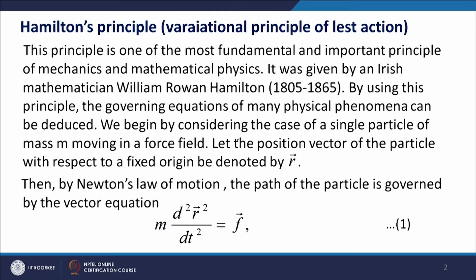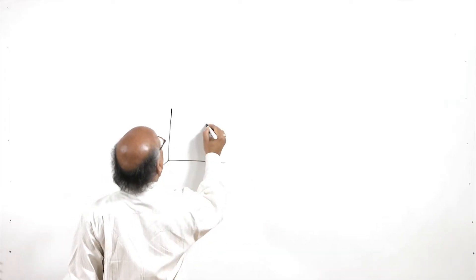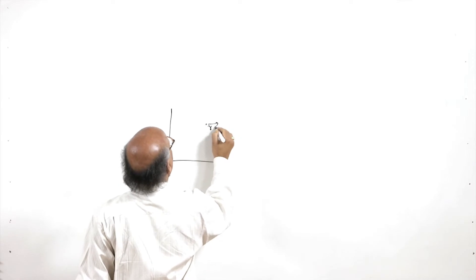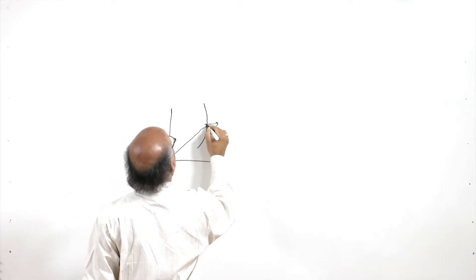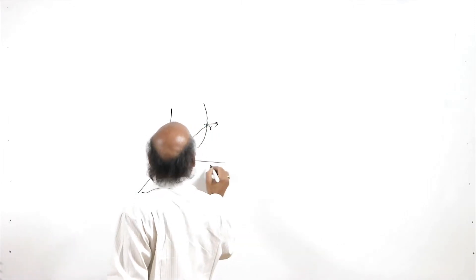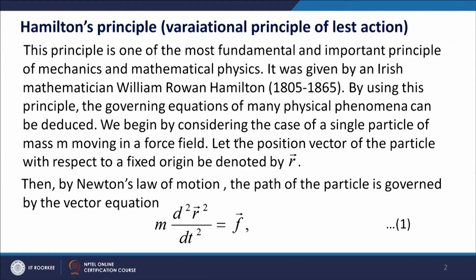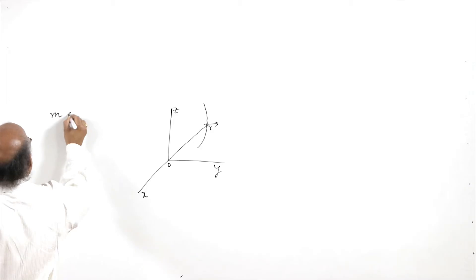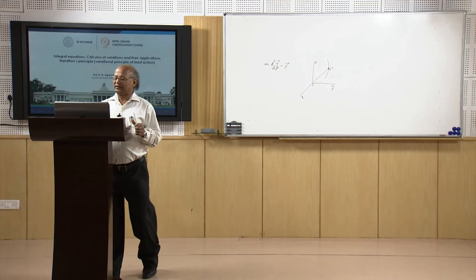Let us begin by considering the case of a single particle of mass m which is moving in a force field. The position vector of the particle with respect to a fixed origin — with x, y, and z axes — is r. This is the path of the particle, and r is the position vector at any time t. By Newton's law of motion, the path of the particle is governed by the vector equation m d²r/dt² = F, where F is the force acting on the particle.